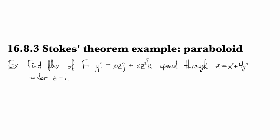In this case, we'll be looking at a paraboloid, and we're going to find the flux of this vector field, y comma minus xz comma xz squared. We're going to find the flux going upward, so that's the orientation for this surface. It's going to be going upward through this paraboloid, an elliptical paraboloid z = x² + 4y². We're looking at the portion of the surface which is under z equals one.